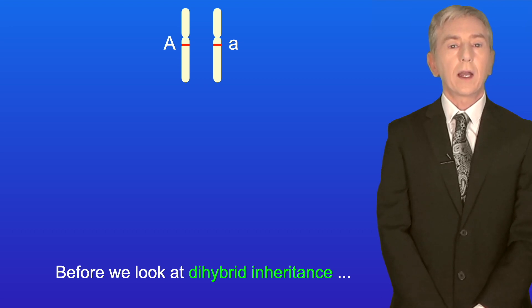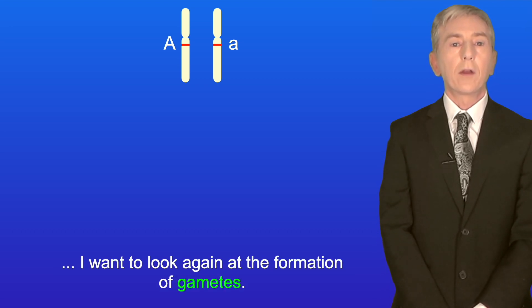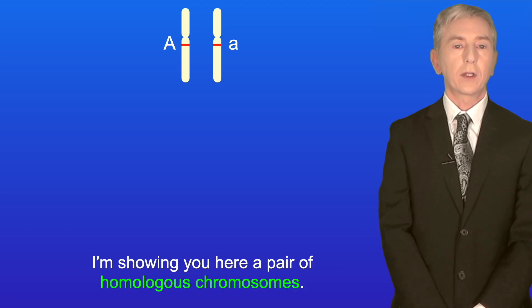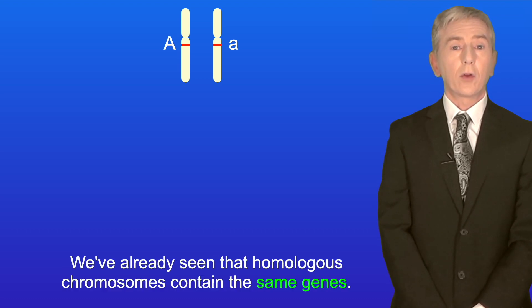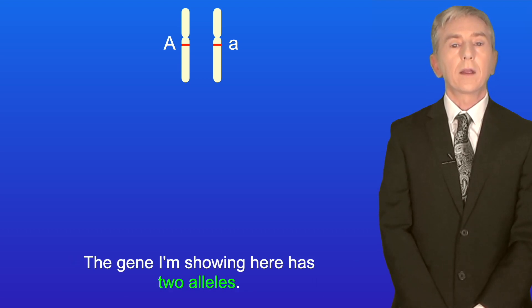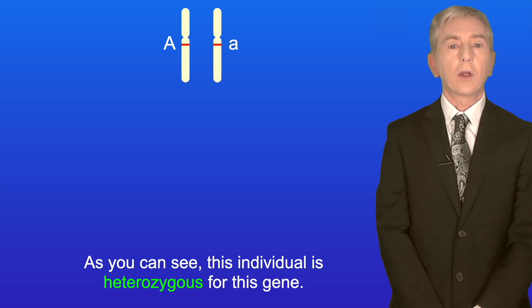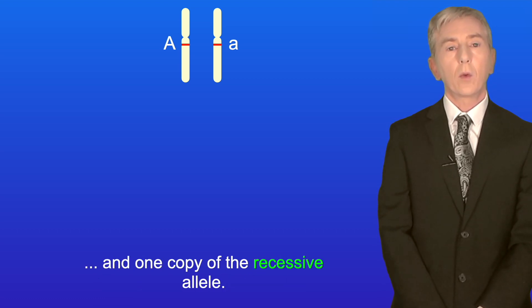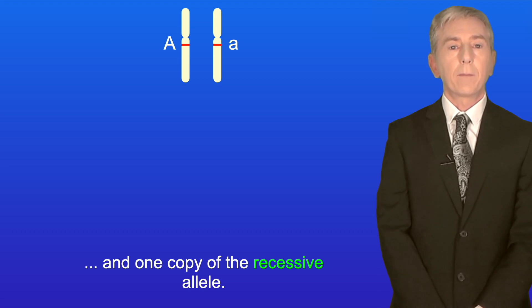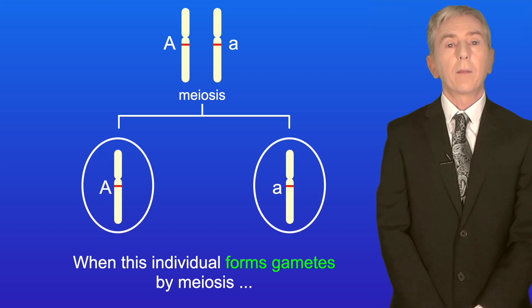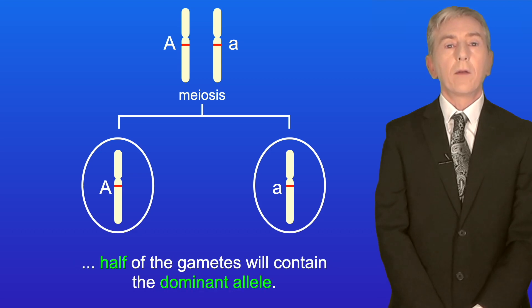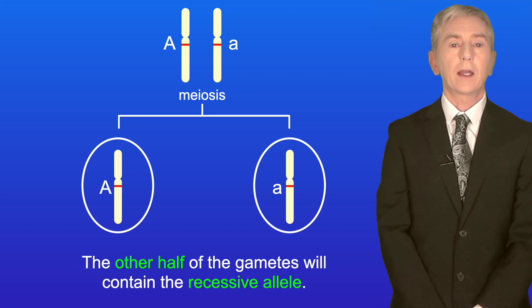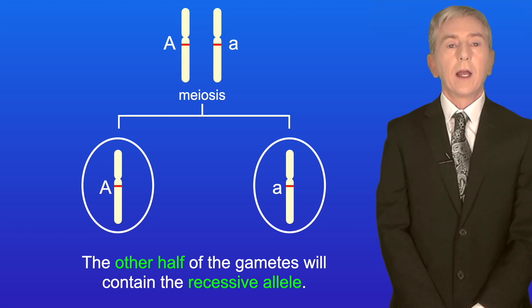Before we look at dihybrid inheritance I want to look again at the formation of gametes. I'm showing you here a pair of homologous chromosomes, and we've already seen that homologous chromosomes contain the same genes. The gene I'm showing here has two alleles. As you can see, this individual is heterozygous for this gene, so they have one copy of the dominant allele and one copy of the recessive allele. When this individual forms gametes by meiosis, half of the gametes will contain the dominant allele and the other half will contain the recessive allele.